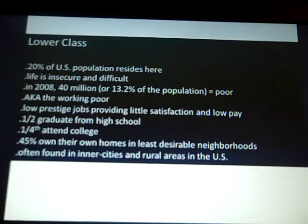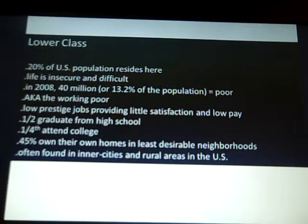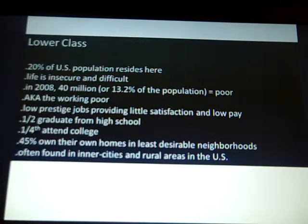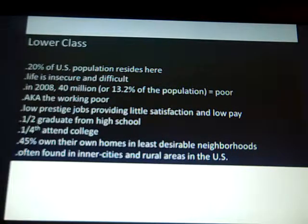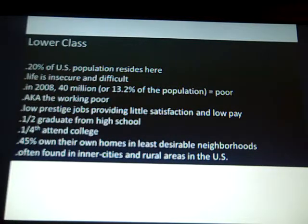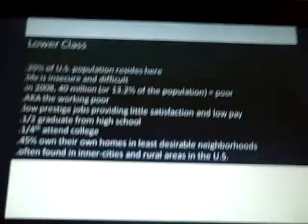People in the middle and upper classes don't have to deal with those problems. Only 25% of people in the lower class will attend college, and a statistic I saw recently suggested that only about 5% or 6% actually graduate with a college degree — which is really eye-opening. 45% own their own homes in the least desirable neighborhoods. Lower-class populations are often found in inner cities — relevant to urban sociology — and also in rural areas in the United States, like West Virginia, like where we live.